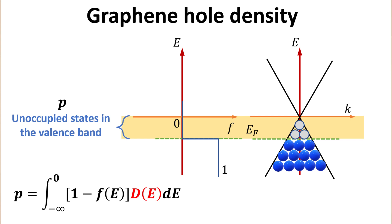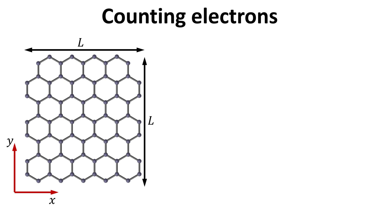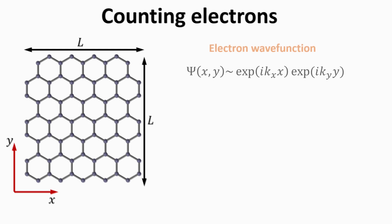In order for us to proceed, we will first have to derive an expression for d. Let's consider a uniform sheet of graphene with dimension L by L. The spatial part of the electron wave function can be described by the plane wave's form as shown, where kx and ky are the in-plane wave vector components.